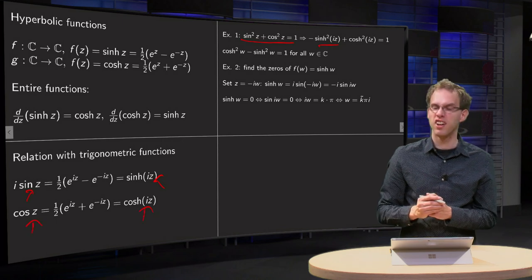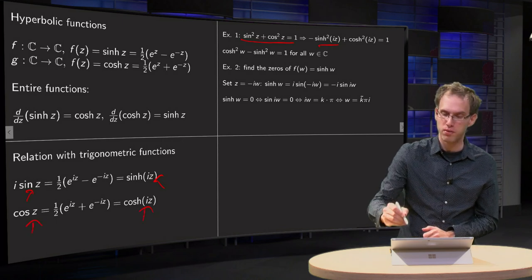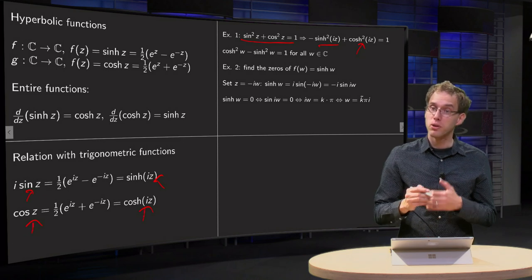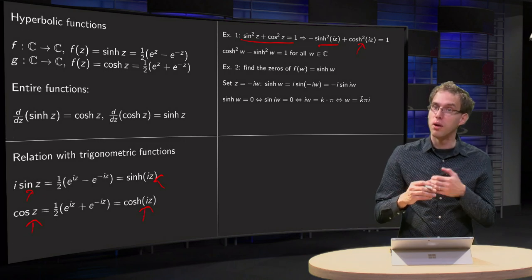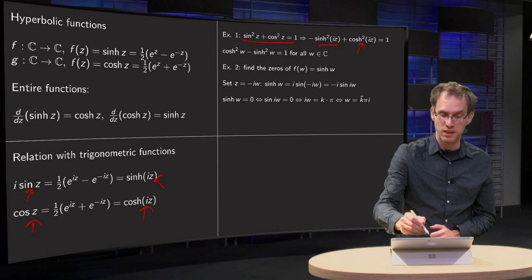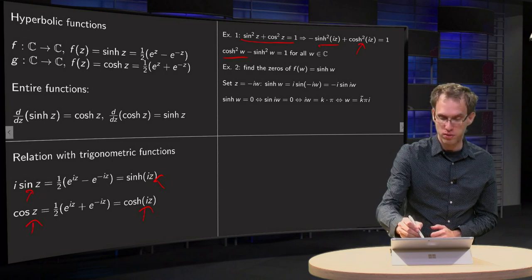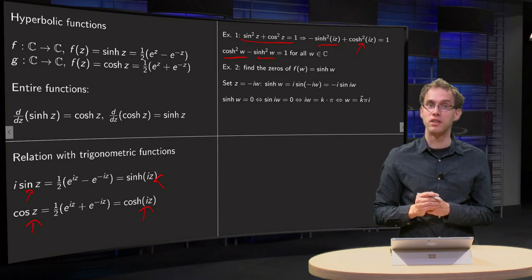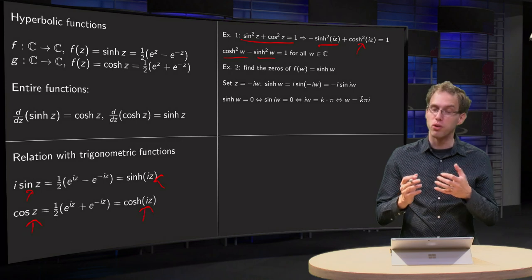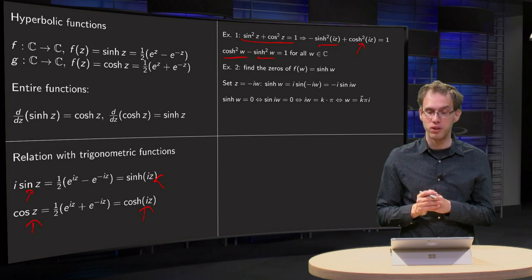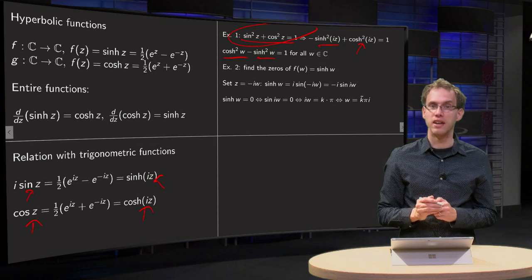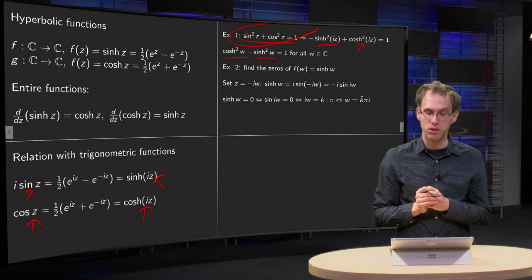Cosine hyperbolic of iz squared gives you 1. So you notice that if you substitute w equals i times z, you get cosine hyperbolic squared of w minus sine hyperbolic squared of w equals 1. You can do this for all w, so this holds for all w in ℂ — very similar to the identity for sine and cosine.